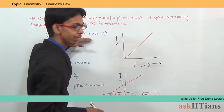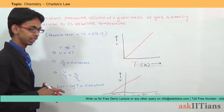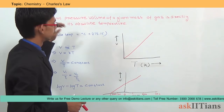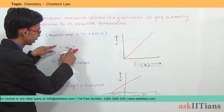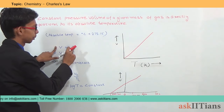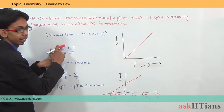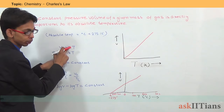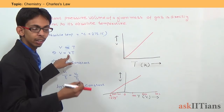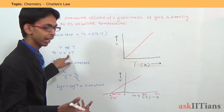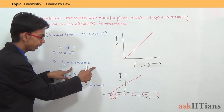This is the relation between temperature in Kelvin — that is absolute temperature — and degree Celsius. Now, according to Charles's Law, volume is directly proportional to absolute temperature. Absolute temperature is always represented by capital T. If we eliminate the proportionality sign, we get V = KT, where K is a constant which depends on the nature of the gas.